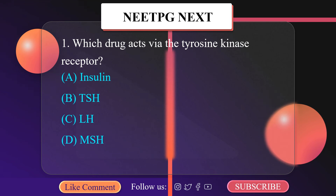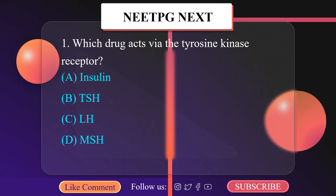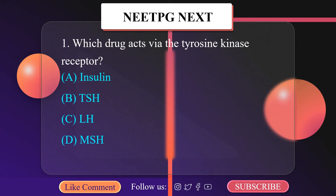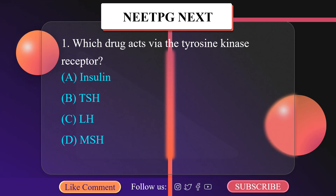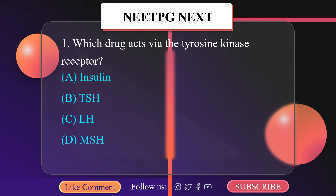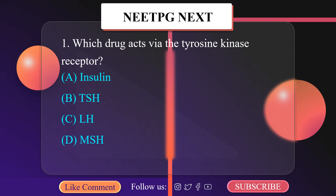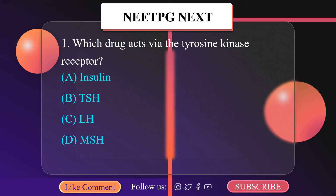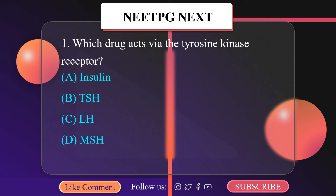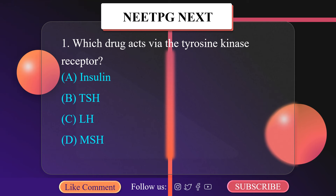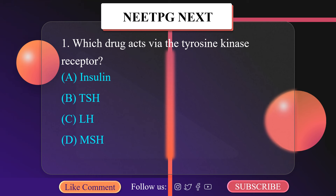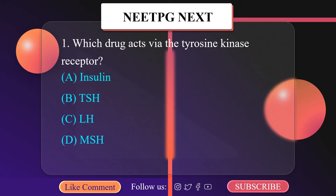Insulin acts on a specific receptor located on the cell membrane of practically every cell, but the density depends on the cell type — liver cells and fat cells are very rich. This insulin receptor is a receptor tyrosine kinase, that is RTK.